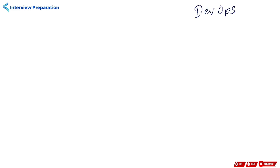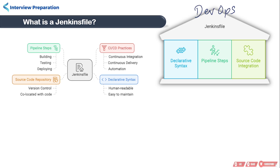Hello friends, welcome to interview preparation. If you are preparing for a DevOps profile, then you must know about what is a Jenkinsfile. A Jenkinsfile is a crucial component in the Jenkins automation server, serving as a blueprint defining the Jenkins pipeline. It is used to define the entire build process for a project, including the steps to be executed and the order in which they are to be executed. This file is typically stored in the source code repository of the project and is read by Jenkins to execute the build process.